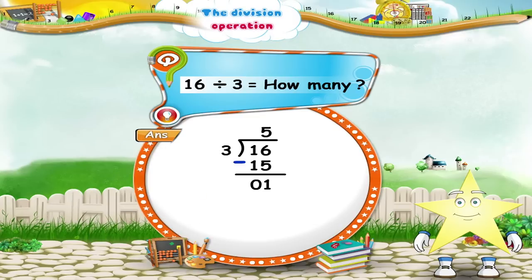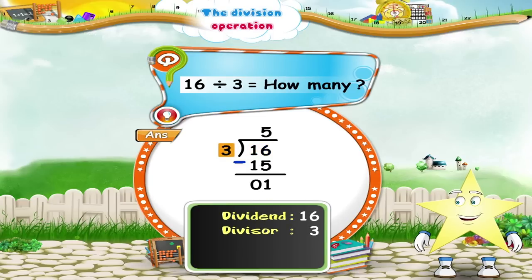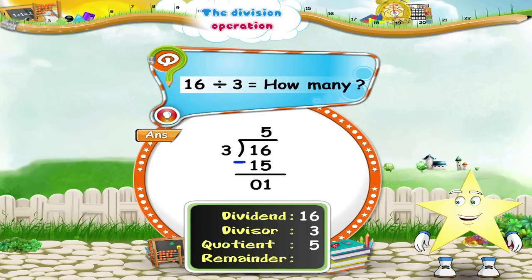So Starry, when we divide 16 by 3: 16 is the Dividend, 3 is the Divisor, the quotient is 5, and the remainder is 1.